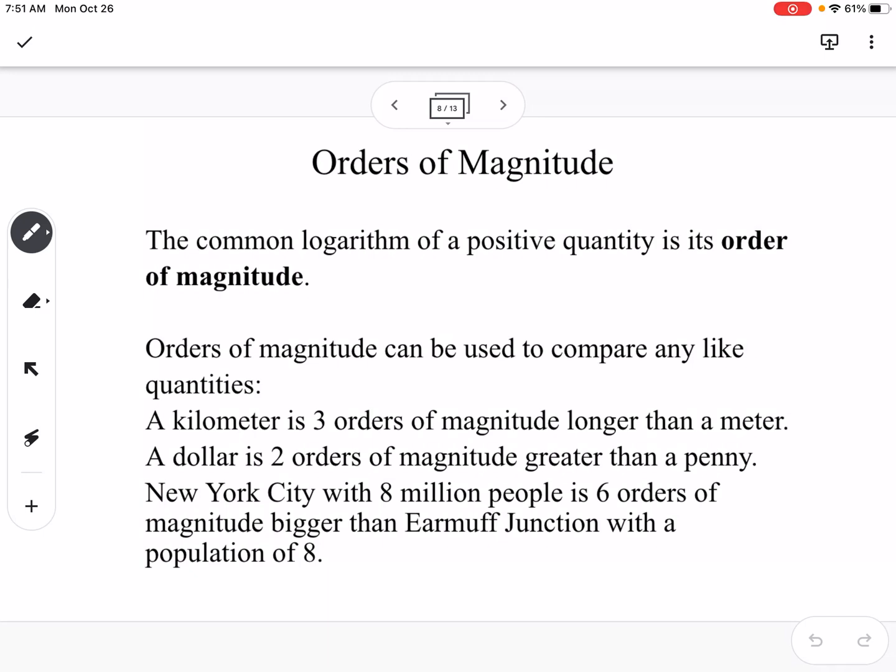Orders of magnitude. Common logarithm of a positive quantity is its order of magnitude, so we think of powers of 10 exponential magnitude. A kilometer is 3 orders of magnitude longer than a meter.